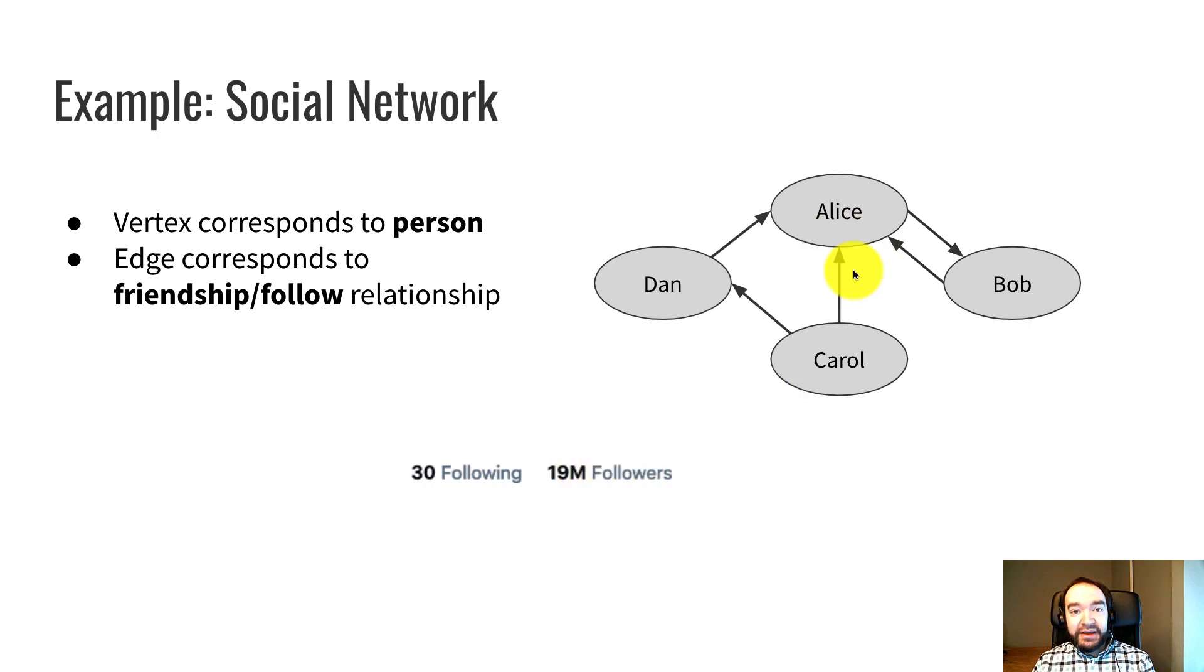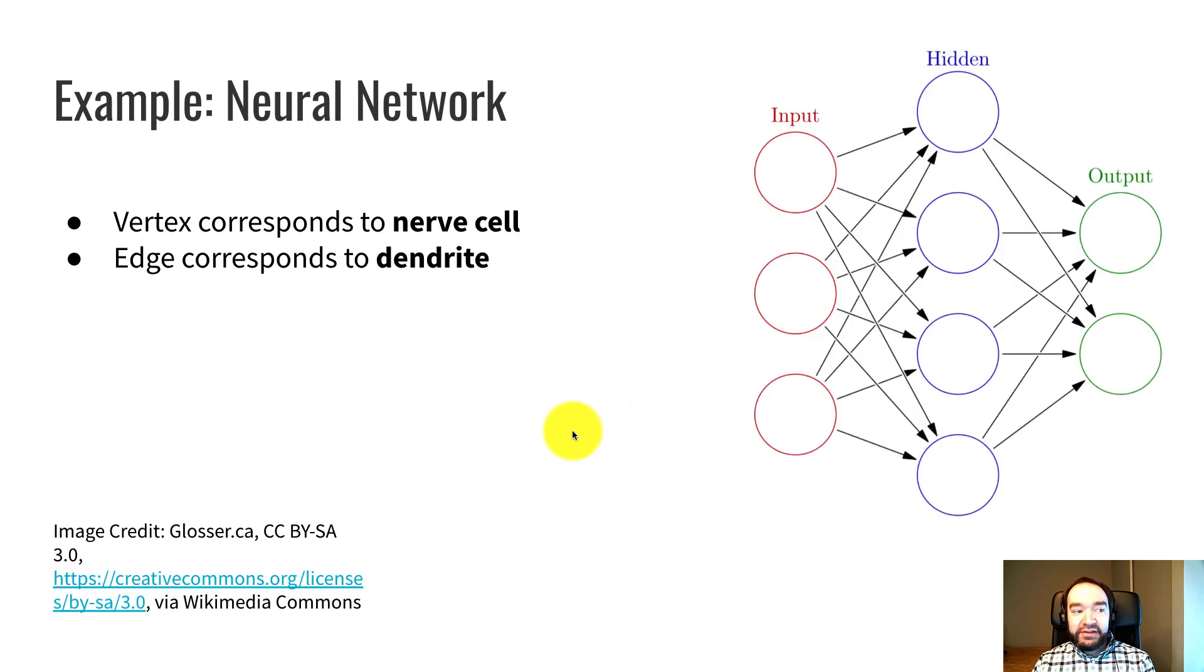Finally, another example is a neural network. Neural network is a technique used in machine learning to implement artificial intelligence. And the way that it works is a simulation of something like a brain or set of nerve cells. So every vertex corresponds to one of these nerve cells. And every edge corresponds to a connection between two nerve cells, which is called a dendrite.